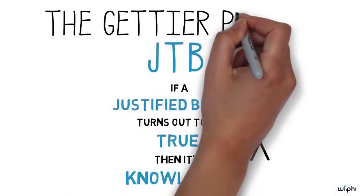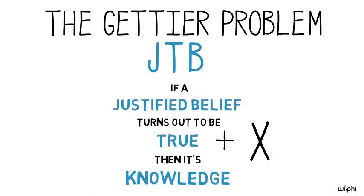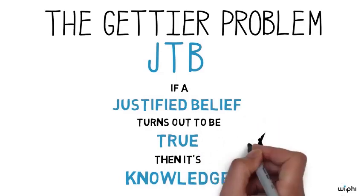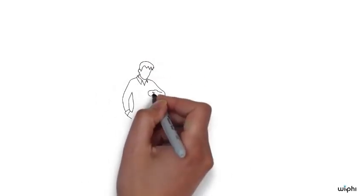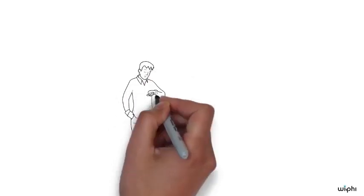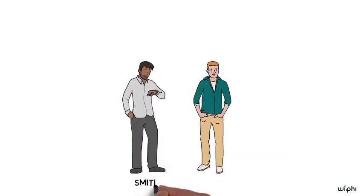Gettier himself didn't think the JTB analysis was correct, and he came up with some counterexamples to it, where someone has a true and justified belief but seems not to know. Here's his first counterexample. Smith and Jones are rival job applicants. Gettier doesn't say how, but they meet each other, perhaps in a waiting room after their job interviews, waiting to hear who got the job.